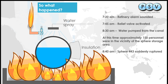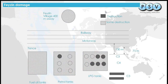From when the tank BLEVEd, there were no more firefighting efforts for about eight more hours — they stepped back and let the fire burn itself out — which actually led to more explosions and more damage. Looking at the area map, you can see the vessels in dark grey that have been destroyed and light grey where there has been damage. At the Feyzin village, 400 metres away, there was damage from flying debris.